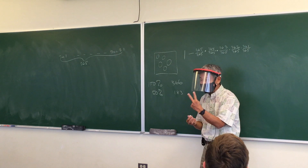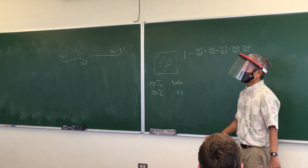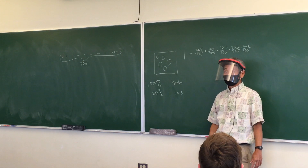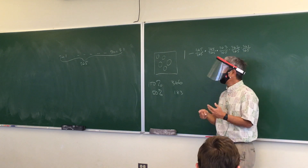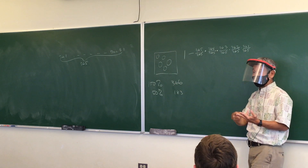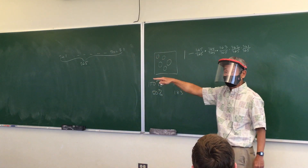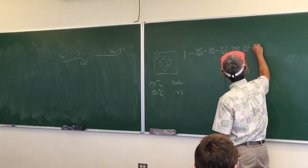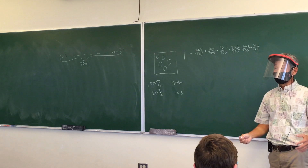If you subtract this product from one, you get the complement. What is the complement of 'they all have different birthdays'? At least two of them have the same birthday. Because to prove 'they all have different birthdays' wrong, you just need to show at least two share a birthday. When you subtract this product from one, that is the probability that at least two people have the same birthday — which is what problem 5B asks.